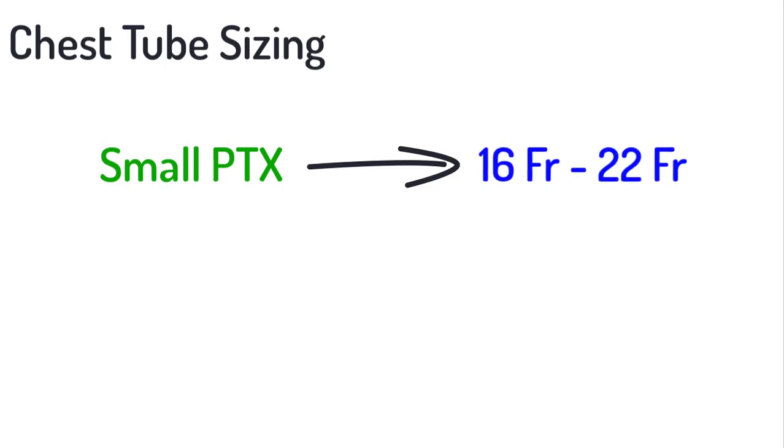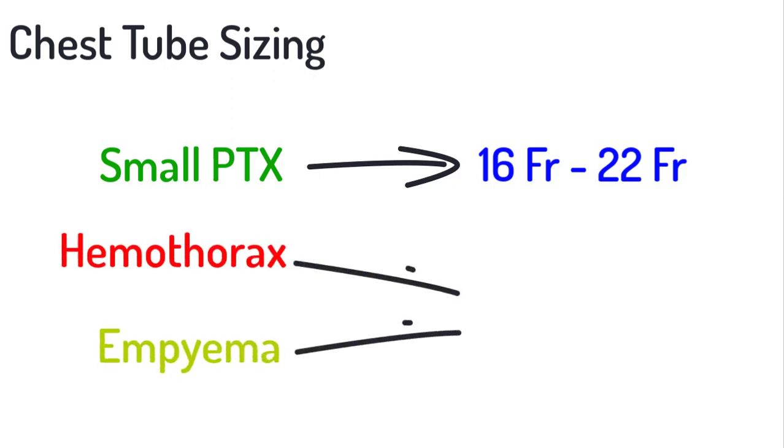A variety of chest tube sizes are available for use in the execution of tube thoracostomy, typically ranging from 12 French to 42 French. In general, it is best to match the size of the tube to the size of the pneumothorax. For instance, to correct a small pneumothorax in a clinically stable patient, a tube size of 16 French to 22 French would be appropriate. Larger pneumothoraces would merit larger tube sizes. Additionally, if hemothorax or empyema is suspected, a tube size of 36 French or larger should be used.